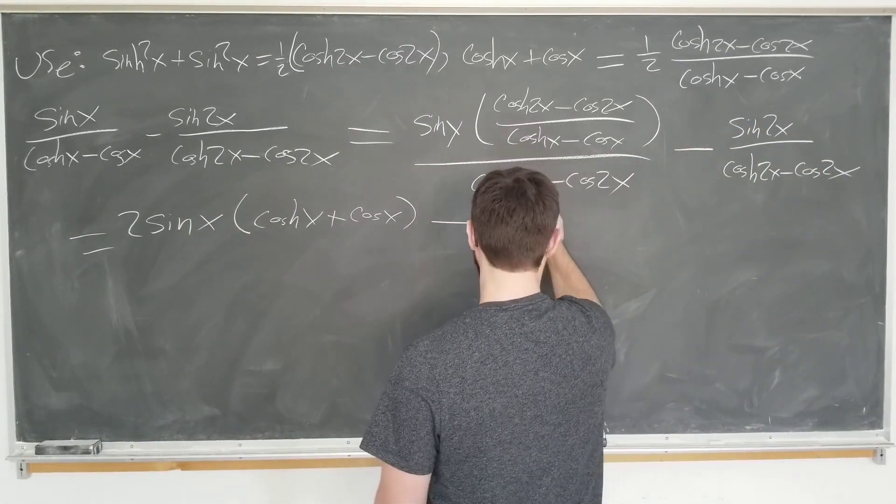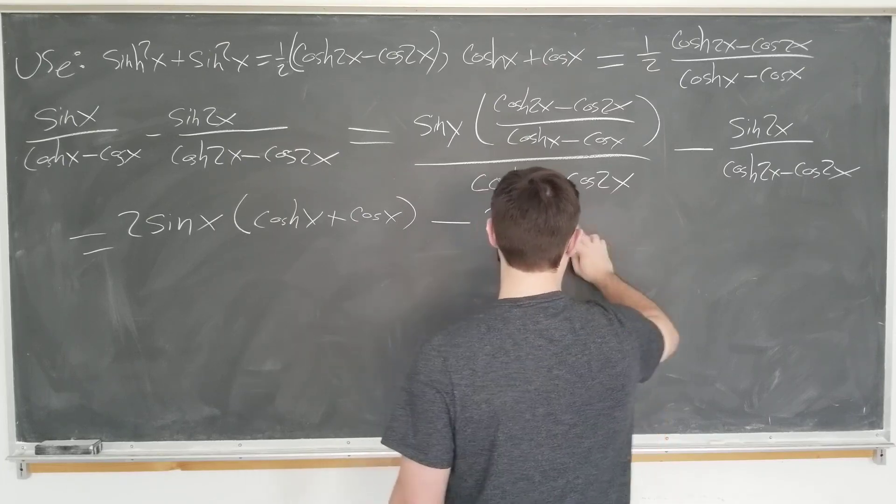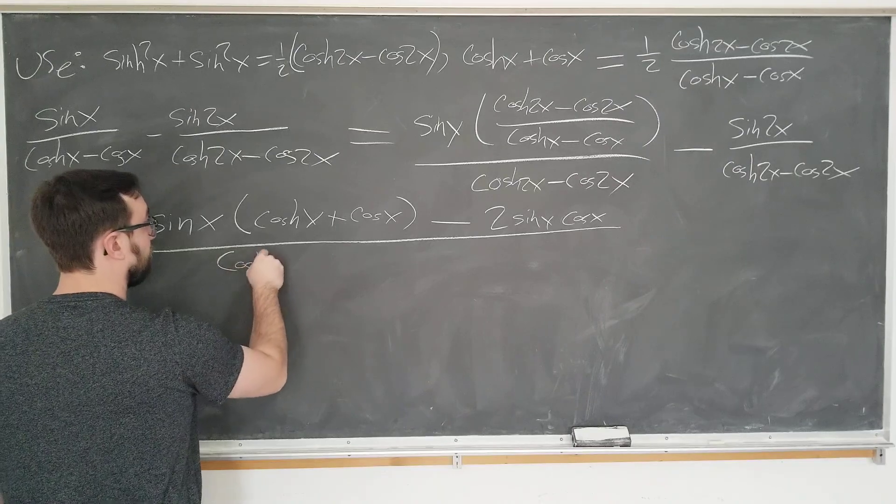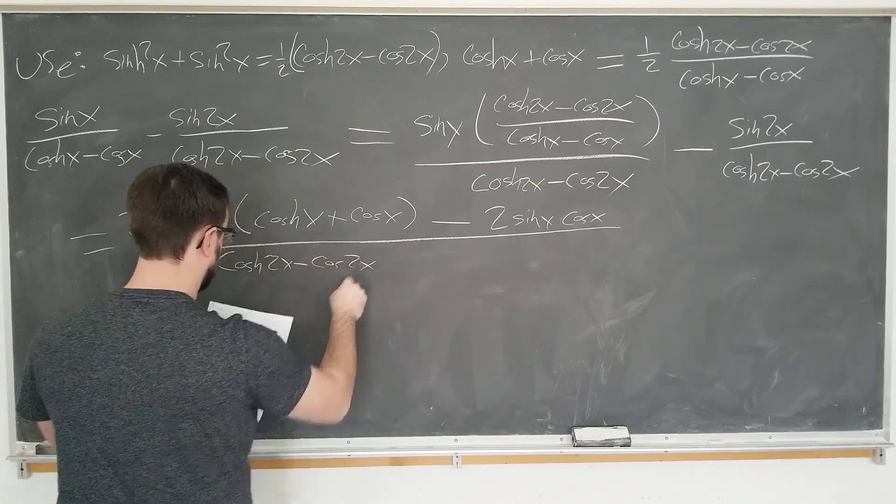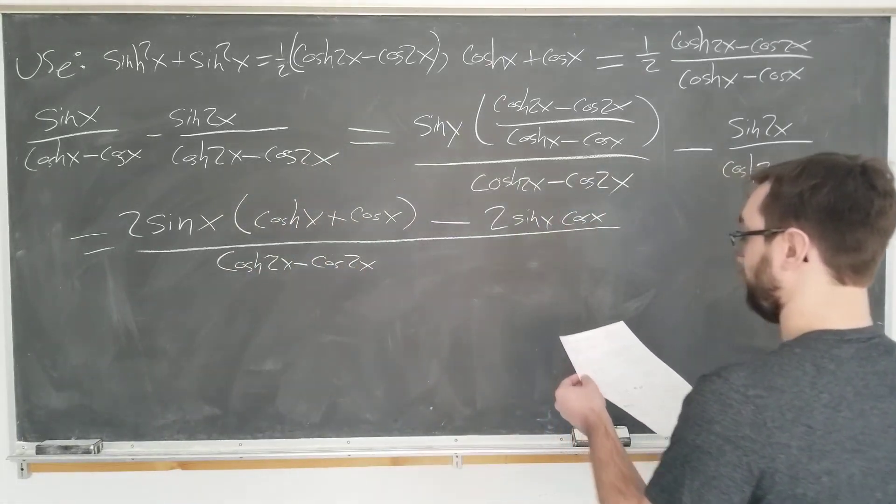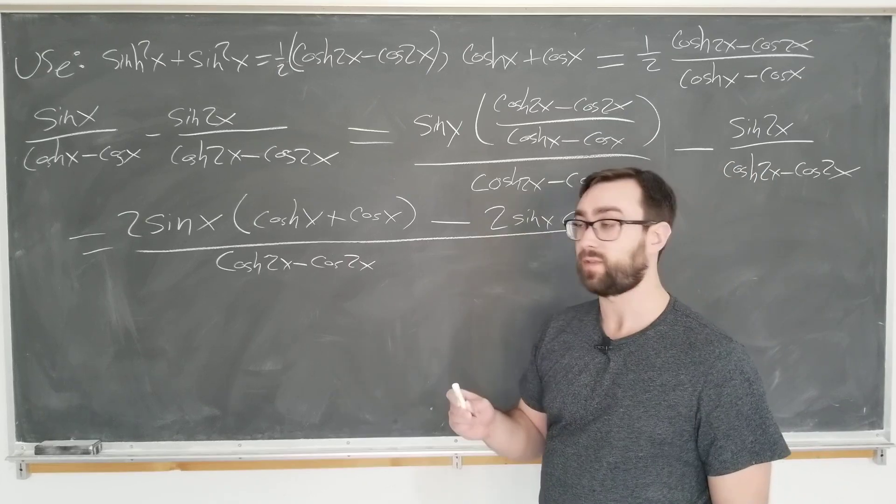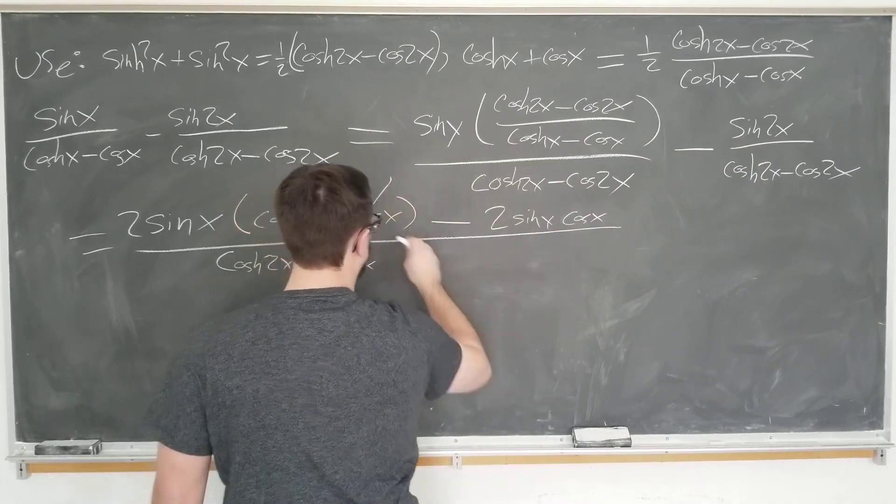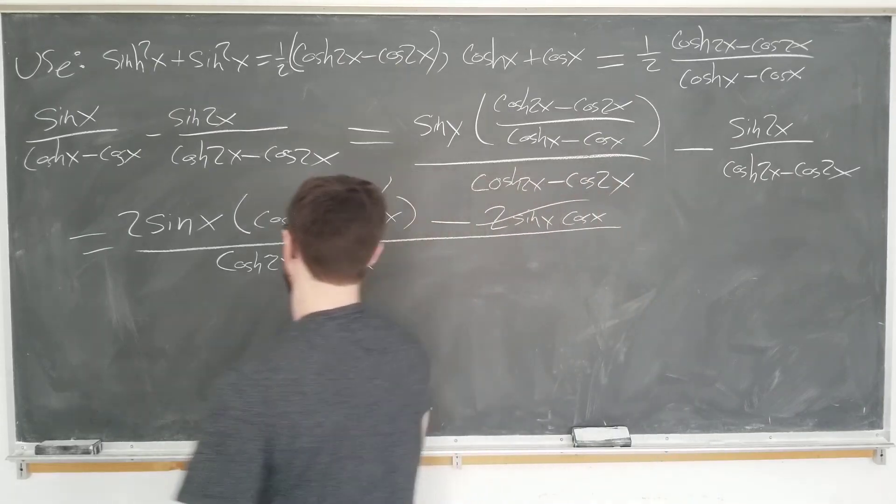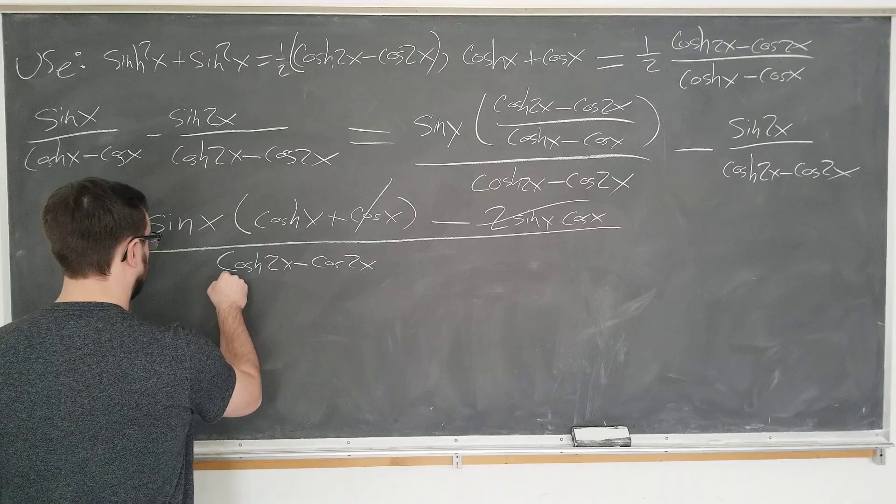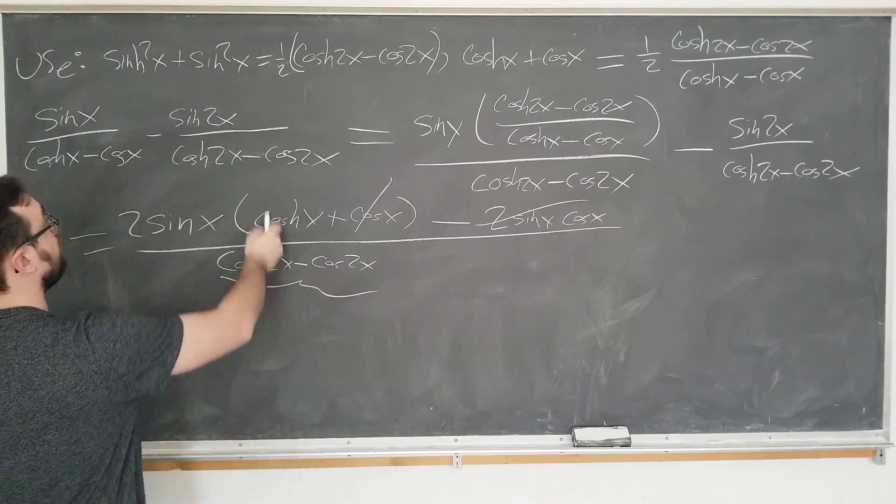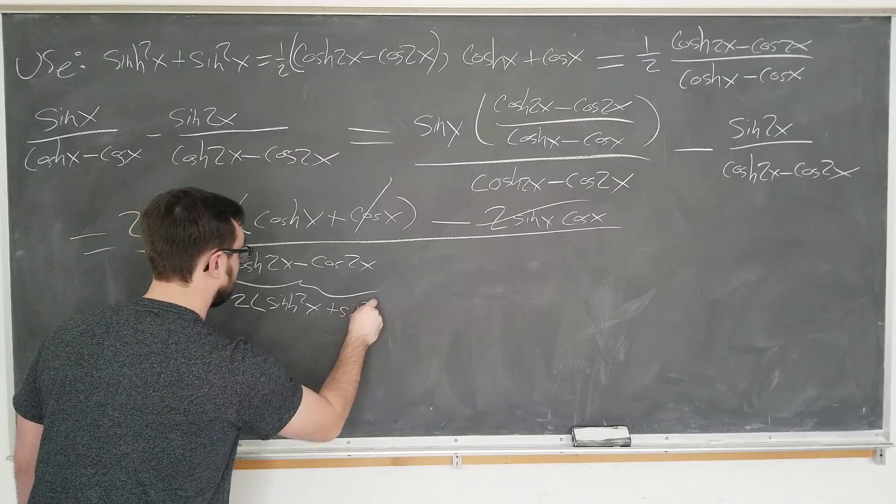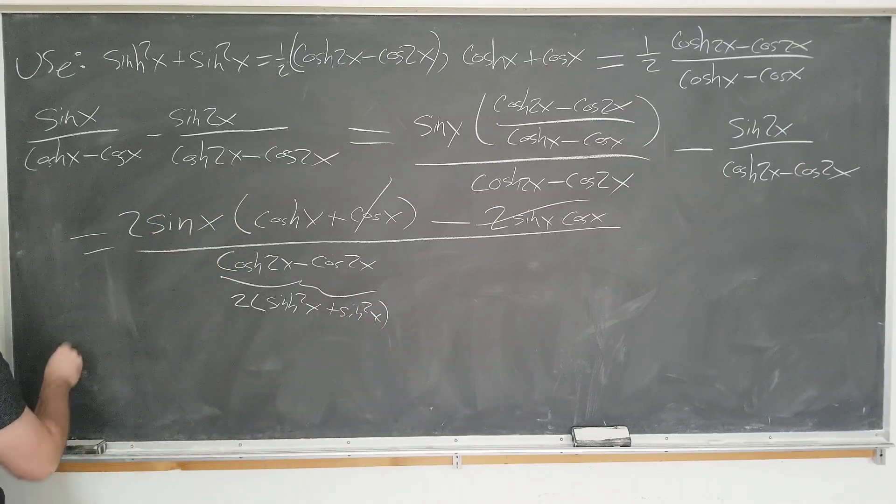And this term is actually divided by the thing that we multiplied. And this term I'm going to leave alone for now. And now we're going to use the identity that we conveniently wrote here. Multiply this by 2 to get what we want. It is sin x times a factor of 2 and that becomes cosh x plus cos x minus sin 2x, which we're going to write now as 2 sin x cos x, since we had that written down a moment ago. This is still being divided by cosh 2x minus cos 2x, right?